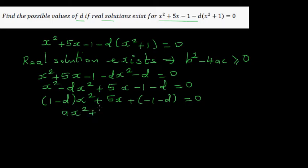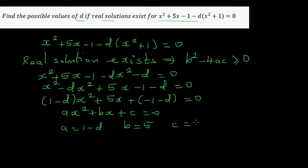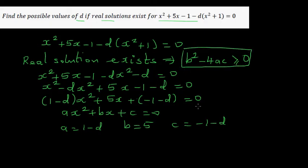Comparing with the standard quadratic form ax squared plus bx plus c equals 0, we identify: a is 1 minus d, b is 5, and c is minus 1 minus d. Now we apply the discriminant condition b squared minus 4ac greater than or equal to 0.